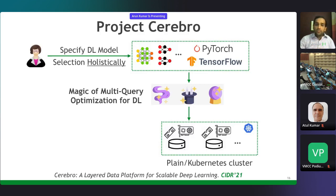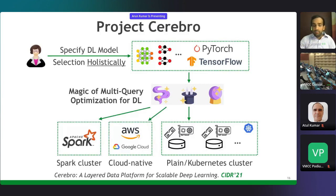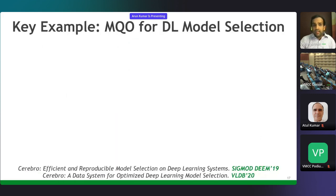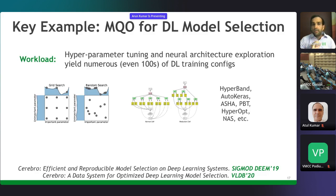This is what we call logical-physical decoupling in the database world: separating the what of the computation from the how of the execution. This is the core of how relational DBMSs have query optimizers that make SQL queries much faster than writing low-level data access code. We are bringing this philosophy to the deep learning systems world. In the context of hyperparameter tuning, when training deep learning models you have to tune learning rate, regularization, and so on, using heuristics like grid search, random search, or AutoML heuristics like Hyperband, ASHA, or Hyperopt—potentially constructing hundreds of training configurations.